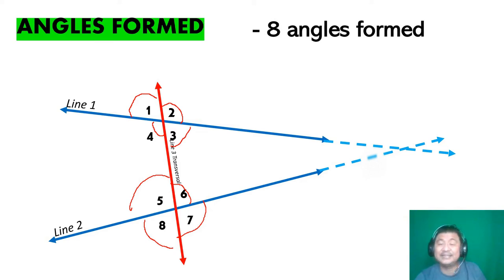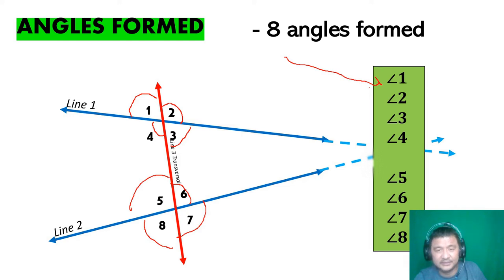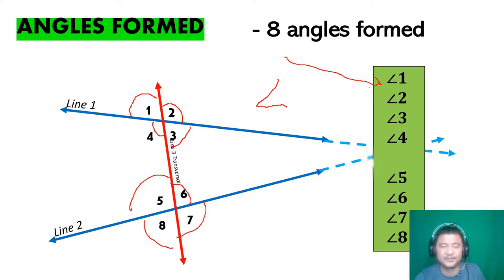There are eight angles formed and we name them using this symbol. Take note of this symbol — it looks like the letter L, like a less-than symbol but written this way. That means angle: angle one, angle two, and so on and so forth.